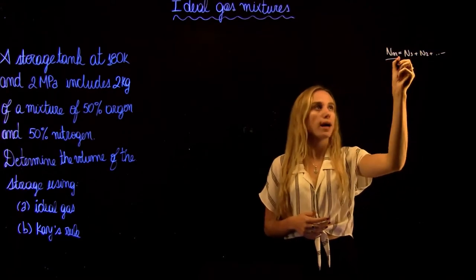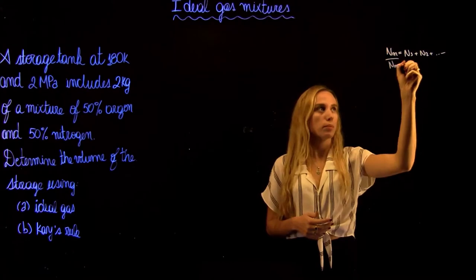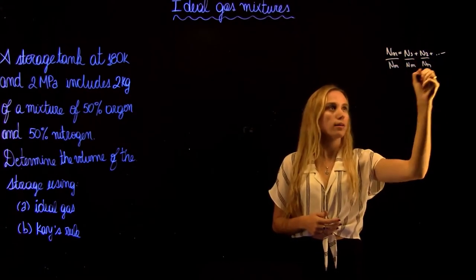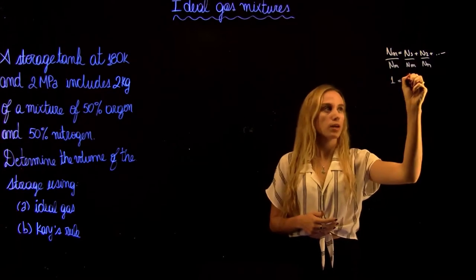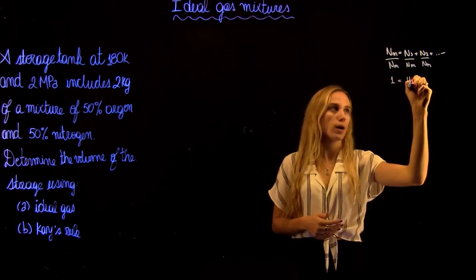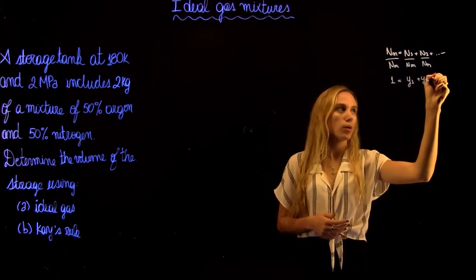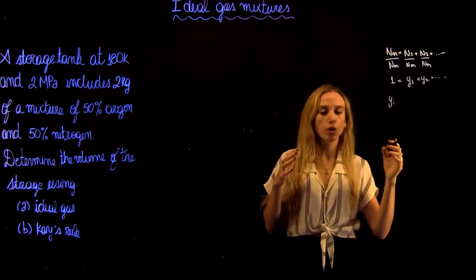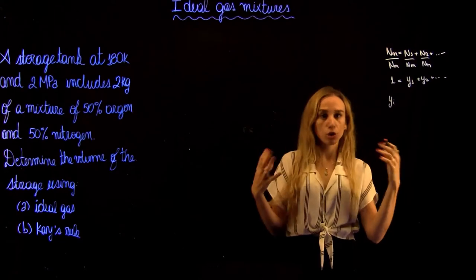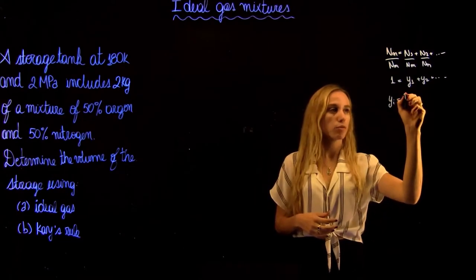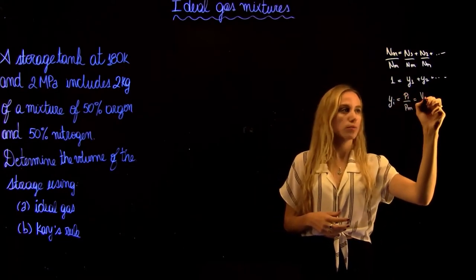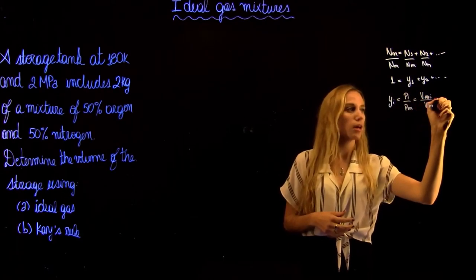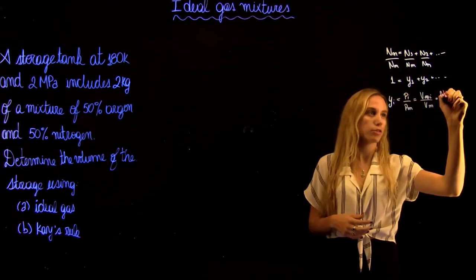And if we divide each component by the total number of moles of the mixture, we obtain that the sum of all mole fractions equals 1 — so y1 plus y2 and so on. The mole fraction is just the amount of that compound over the total of the mixture, and it can be expressed in terms of pressure, volume, or number of moles.